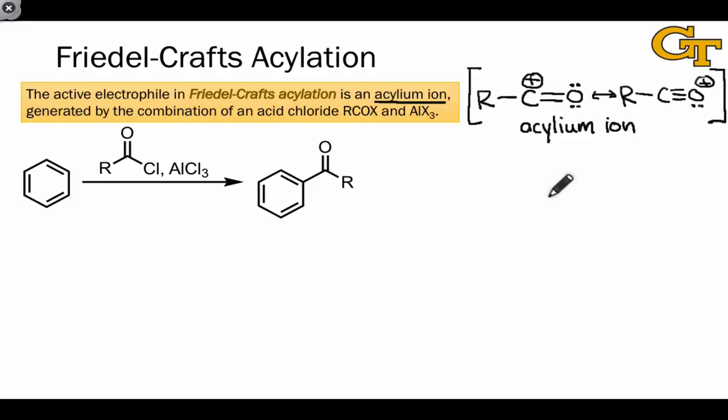How exactly do we generate the acylium ion? Well, in principle, if we start with this molecule and treat it with AlCl3, all we need to do is pull off chloride to generate an acylium ion, and this is essentially what happens.